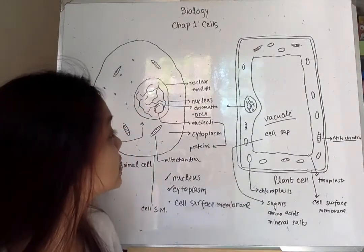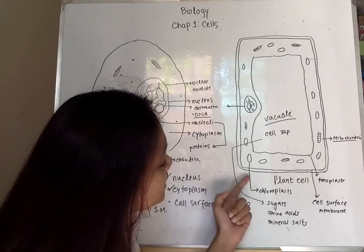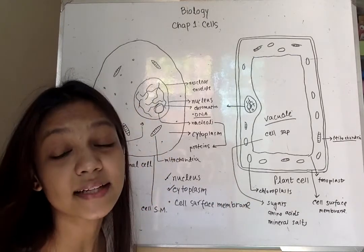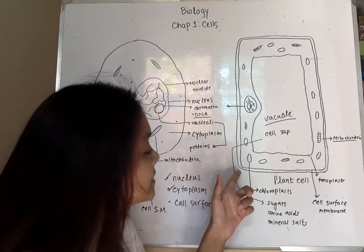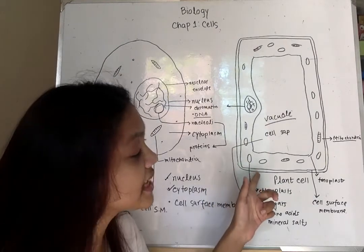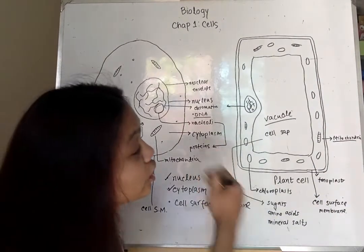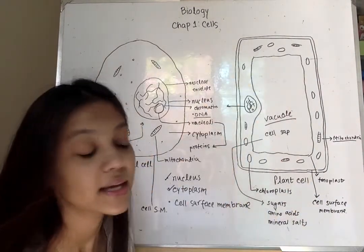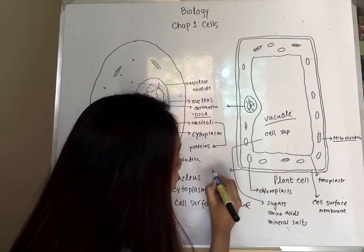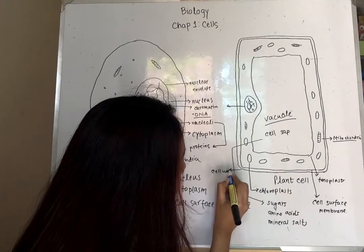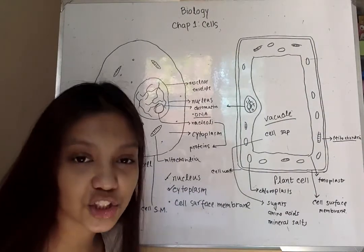In plant cells, you can also see there is another outer line. This is called the cell wall. In plant cells, we have a cell wall in addition to the cell surface membrane, which encloses the whole cell. It is made of cellulose and it protects the cell from any kind of injury.